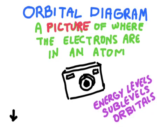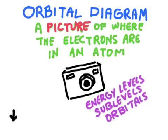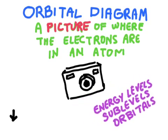Orbital diagrams are a visual representation of where the electrons are in an atom. We're going to include energy levels, sublevels, and orbitals in this representation. Now if you think back to the video on Bohr's diagram, Bohr's diagram only will show us the energy levels, and so the orbital diagram is going to give us a little bit more information as to where those electrons are.